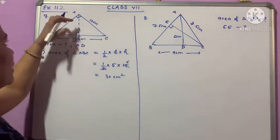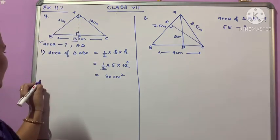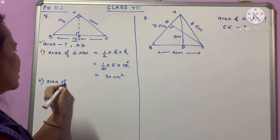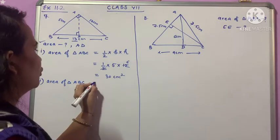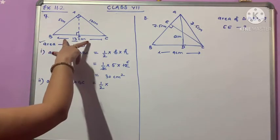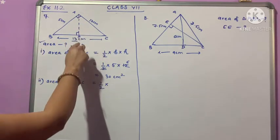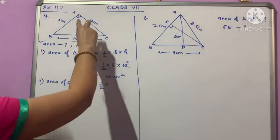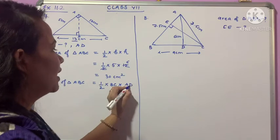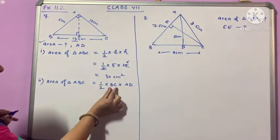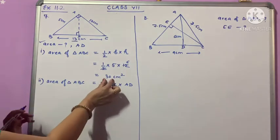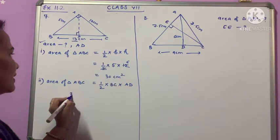Now for the area of triangle ABC using the height AD: Area equals half into base BC into height AD. We know the area is 30, so 30 equals half times BC times AD.